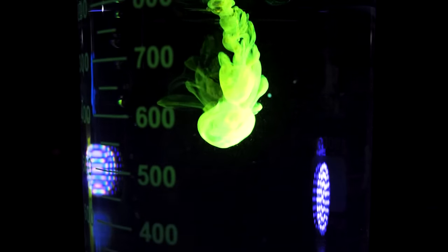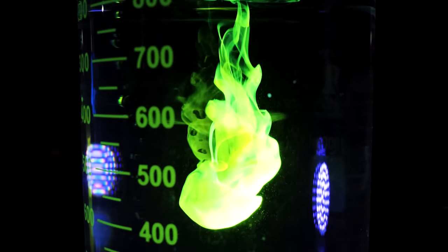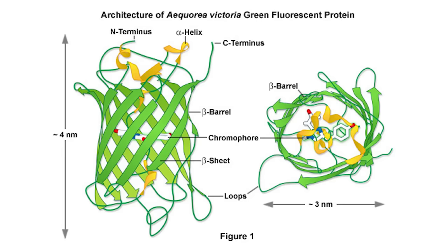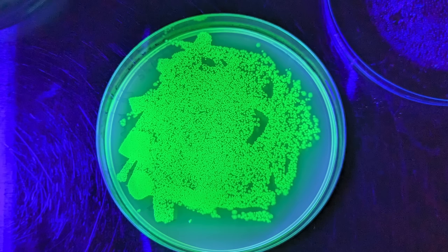You see, theoretically, any highly fluorescent chemical should be able to laze in a dye laser. But what if that chemical was actually a protein? Like for example, green fluorescent protein. This is a protein where its function is really what's written on the tin. It's a protein and when you shine a UV light on it, it glows green.